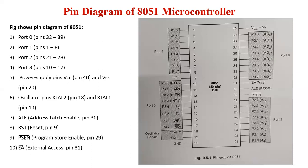First is port number 0, which corresponds to pins 32 to 39. Port 0 pins can be used as input-output pins. The output drivers and input buffers of port 0 are used to access external memory. Port 0 outputs the low-order byte of the external memory address, time-multiplexed with the data being written or read. Thus, port 0 can be used as a multiplexed address or data bus.